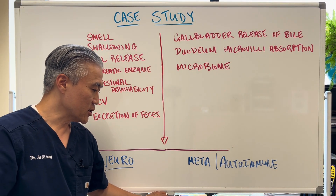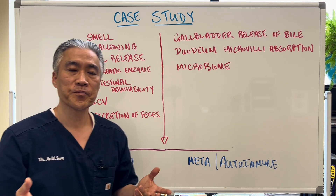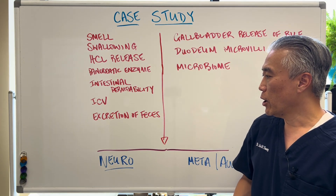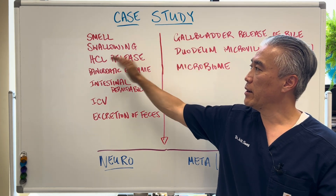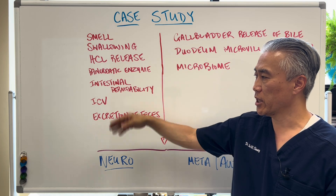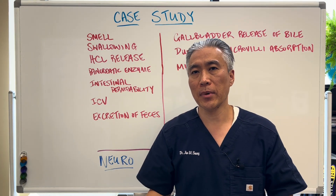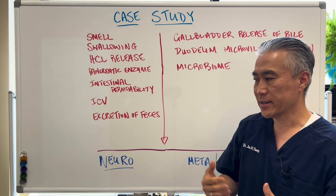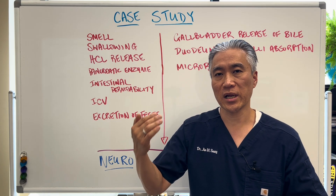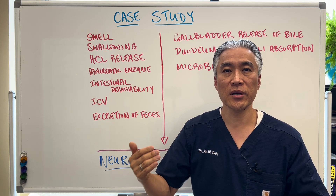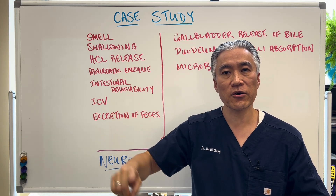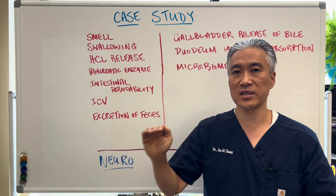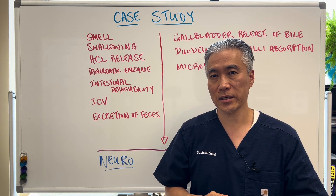In the initial consultation, we need to figure out where the problem might lie and then do testing specific to what we think is the clinical diagnosis. We don't want to just throw HCL, pancreatic enzymes, leaky gut supplements, and a soil-based probiotic at the patient and hope it gets better — that's not the approach. You want to be very specific. Use what we call the clinical decision-making tree: go from mouth to anus, figure out where the problem lies, address it specifically, and get to the underlying mechanism.